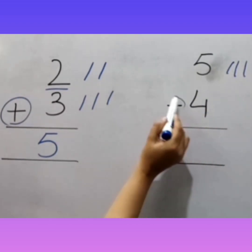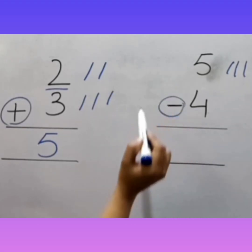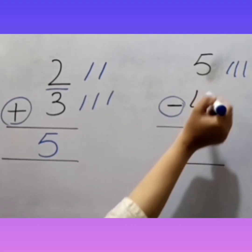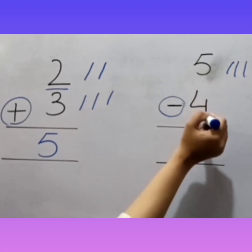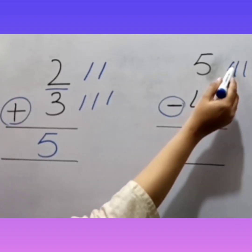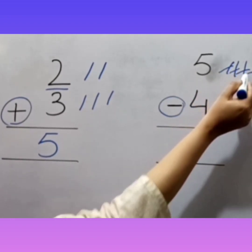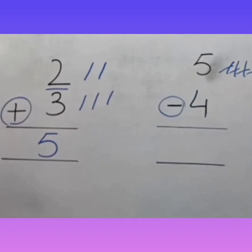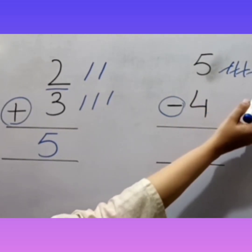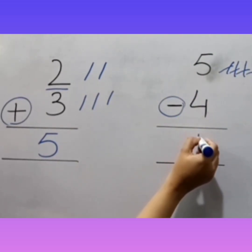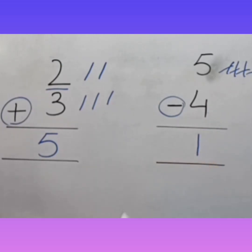Next sum is 5. Draw 5 lines: 1, 2, 3, 4, 5. Minus — that means remove or subtract. Cut 4 lines: 1, 2, 3, 4. We remove 4 lines. How many remaining? We have 1 remaining. The answer is 1.